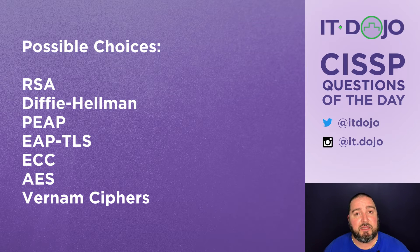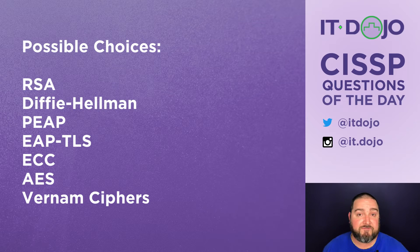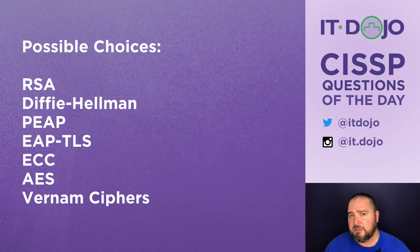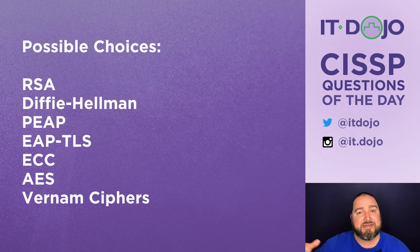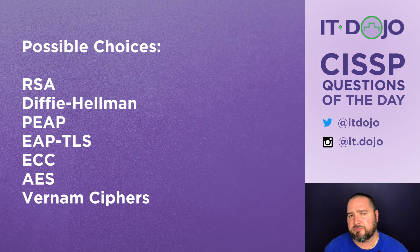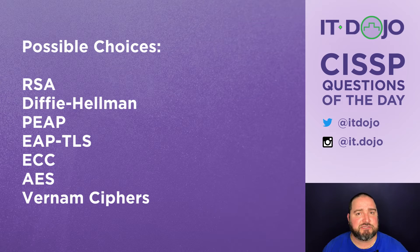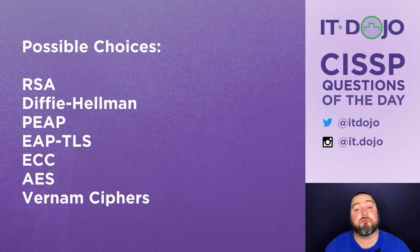The next two options are Protected EAP and EAP-TLS. While both of these are things you might find implemented on mobile devices, they're not actually encryption techniques by themselves. They may ultimately lead to encryption keys being generated and exchanged, but they themselves are not encryption techniques or algorithms — they're more about creating authenticated connections between two devices.